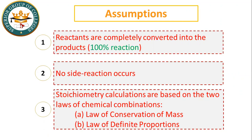Stoichiometric calculations are based on two laws: the law of conservation of mass and the law of definite proportions. The law of conservation of mass means the mass of reactants equals the mass of products. In stoichiometry, since the equation is balanced, the law of conservation of mass is automatically followed.